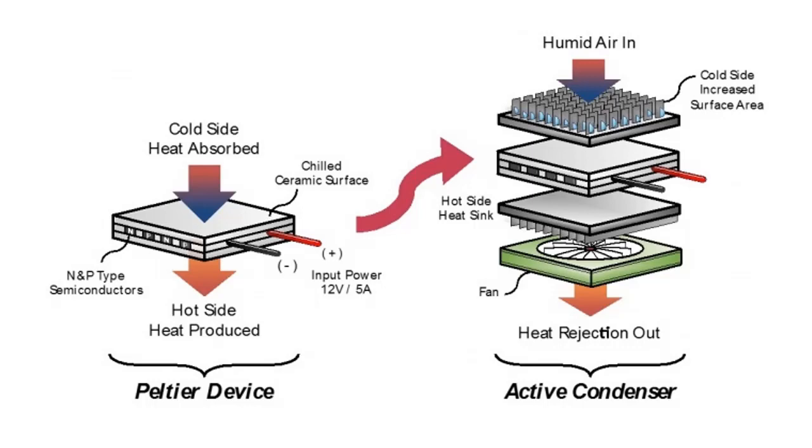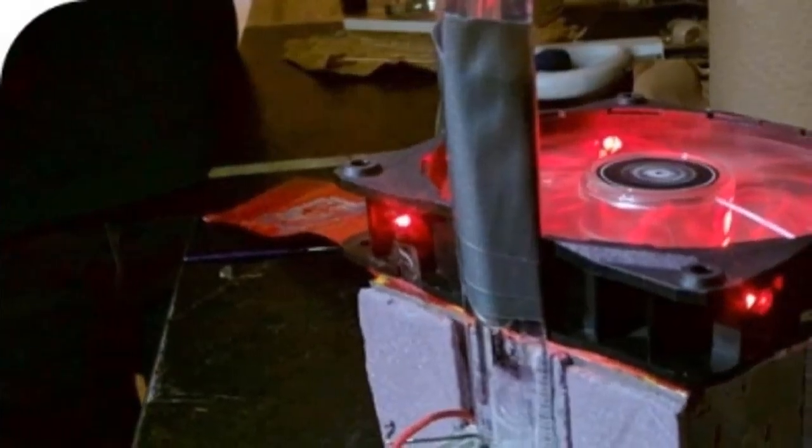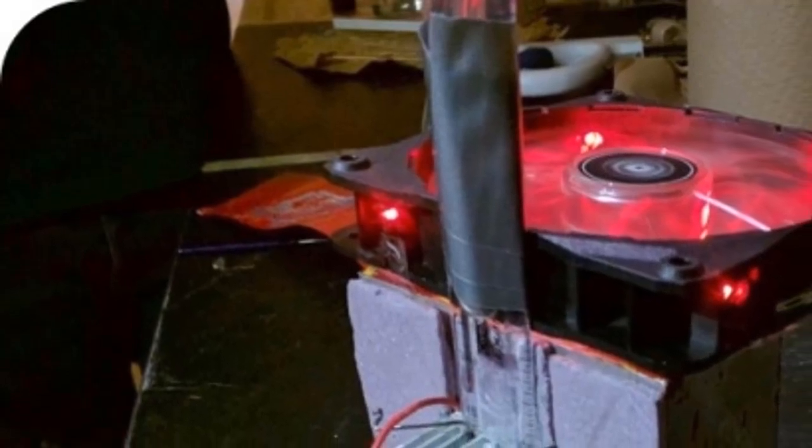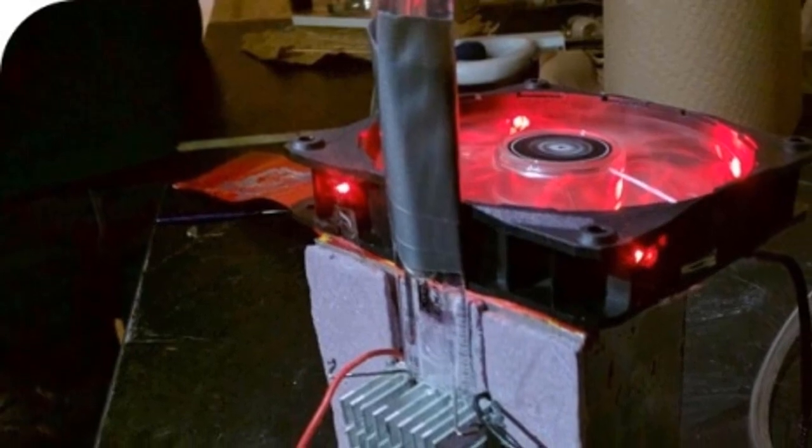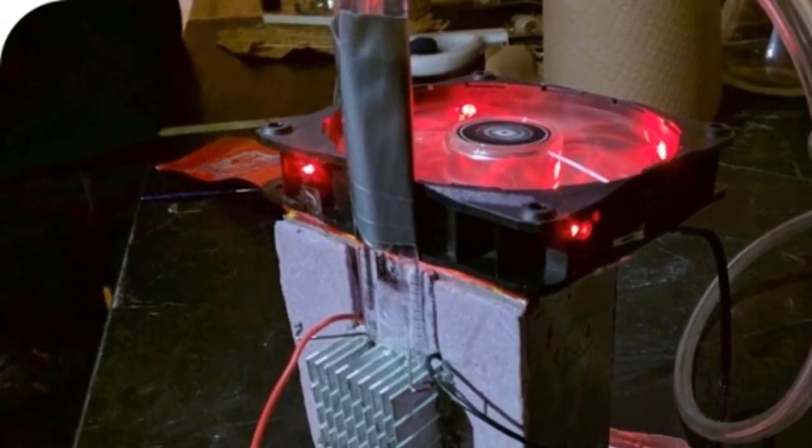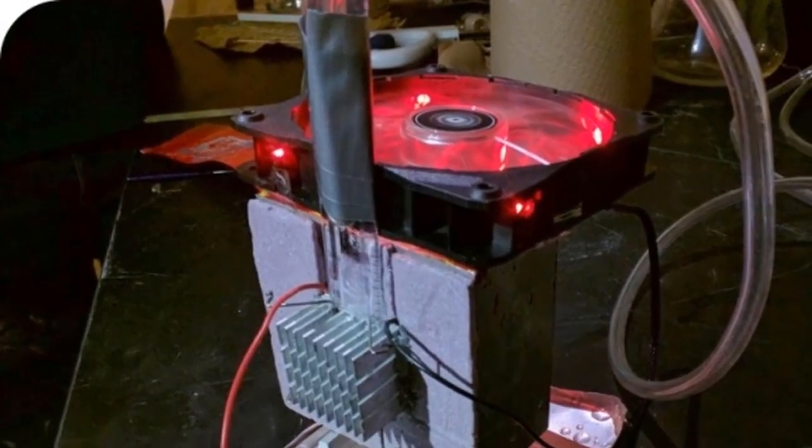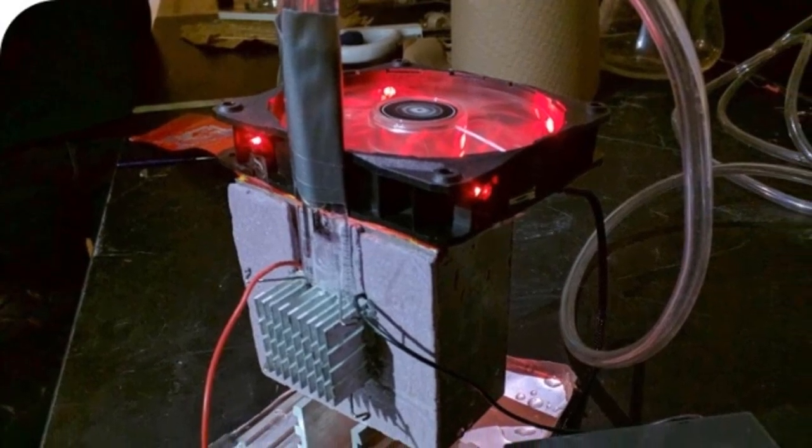Through several iterations and fine-tuning of our lab prototype, we achieved a production capacity of up to three liters of potable water within a 24-hour period, meeting our initial project objectives. Moving forward, our focus is on further optimizing the system to achieve a production capacity of 40 liters of potable water.